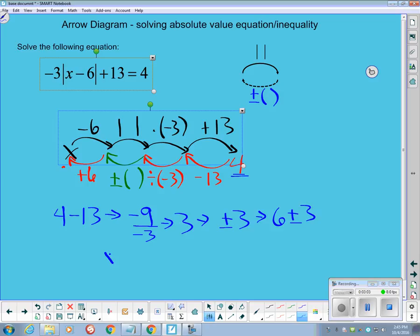That gets me back to the x and tells me that x is either 6 plus 3, which is 9, or x is equal to 6 minus 3, which is 3, and those are the two solutions to this equation.